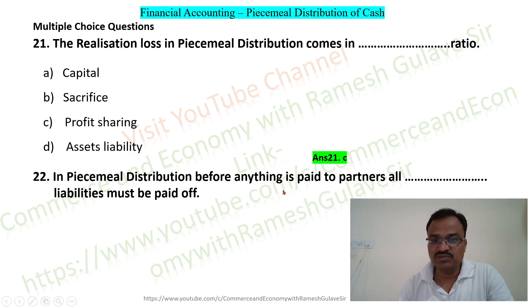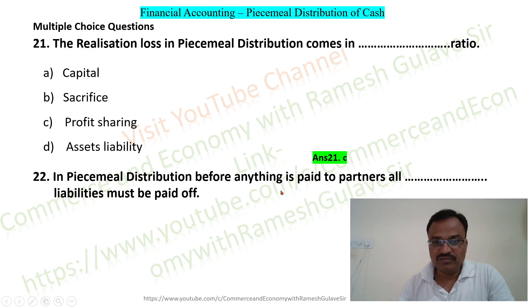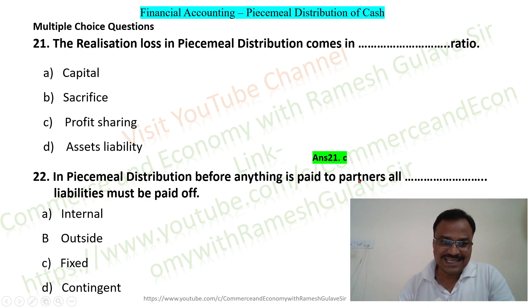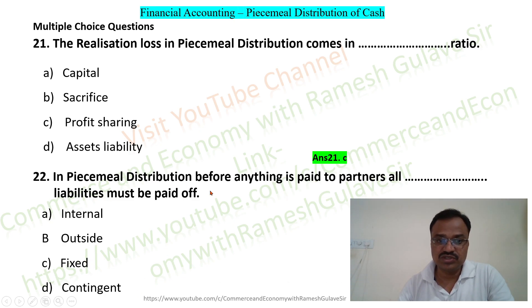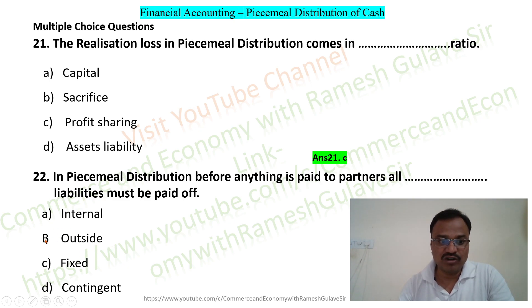Question 22: In piecemeal distribution, before anything is paid to partners, all dash liabilities must be paid off. Options are: internal, outside, fixed, contingent. In piecemeal distribution, before anything is paid to partners, all outside liabilities must be paid off. So option B is the right answer.